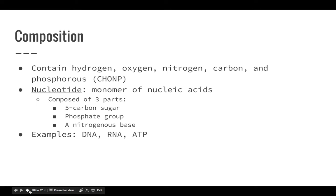The monomer for a nucleic acid is a nucleotide. It's composed of three parts: a 5-carbon sugar, a phosphate group, and a nitrogenous base. Again, we're not really going to talk much about this at all, but just know that the subunit of a nucleic acid is a nucleotide.